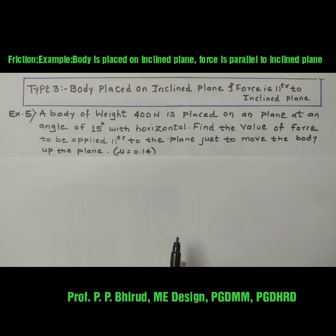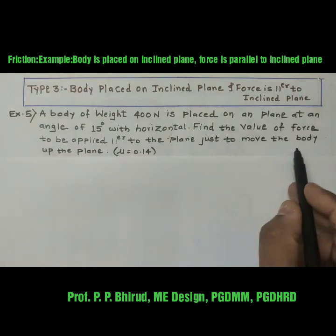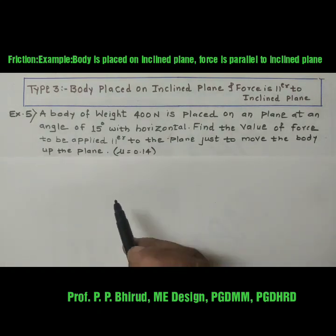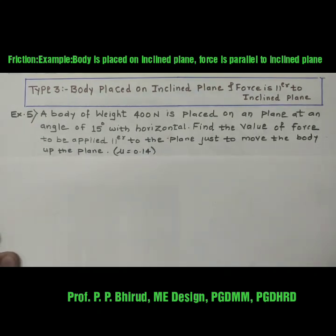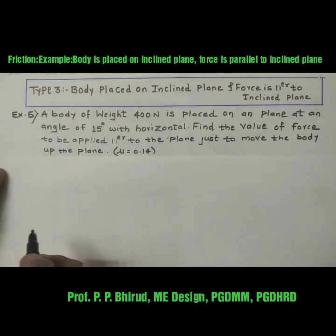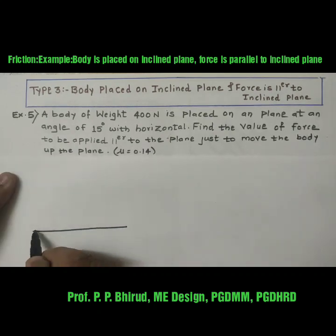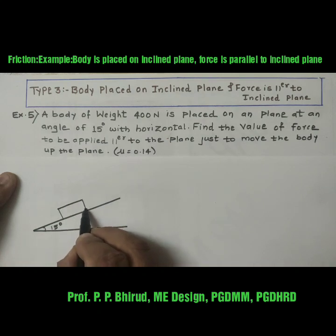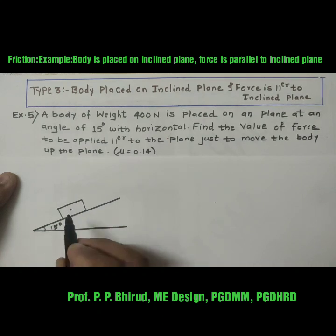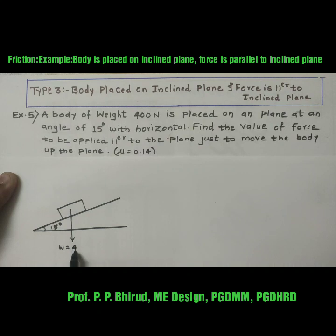We have to find out the force which will move the body in the upward direction. Let's draw the diagram. Horizontal surface, the inclined surface making angle 15 degrees with the horizontal. The body is placed on the inclined plane, its weight W is equal to 400 Newton.